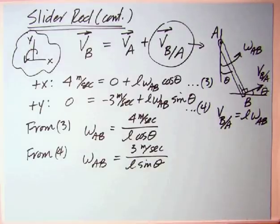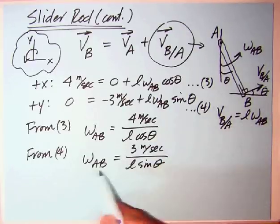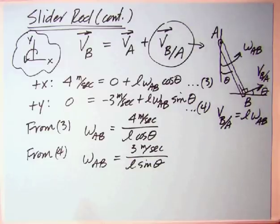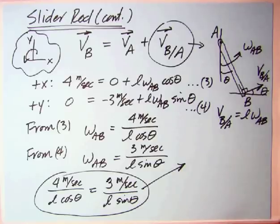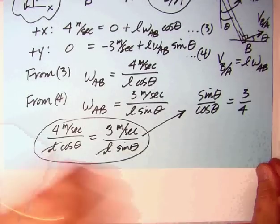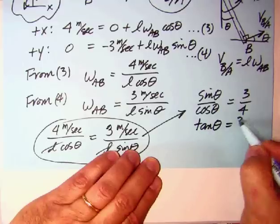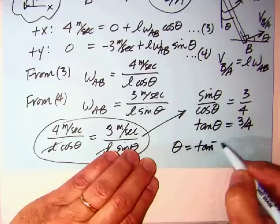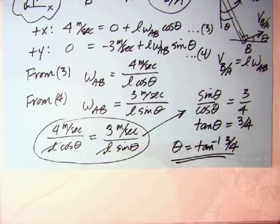If we solve for omega AB in 3, we get 4 meters per second divided by L cosine theta. From 4, we get 3 meters per second divided by L sine theta. So we can equate those. We've got 4 meters per second over L cosine theta equals 3 meters per second over L sine theta. The two L's cancel. If we take sine over here and 4 over there, sine theta over cosine theta equals 3 fourths. You almost could see this coming with the 3 and the 4, the 3, 4, 5 triangle. So tangent theta equals 3 fourths. Theta equals the inverse tangent of 3 fourths. So essentially, sine is 3 fifths and cosine is 4 fifths.